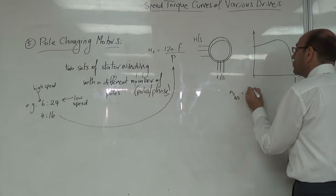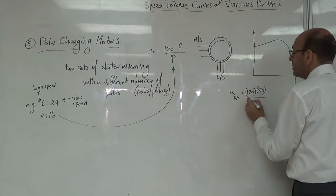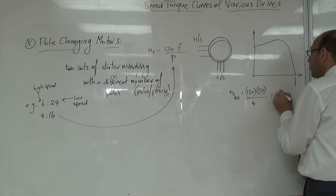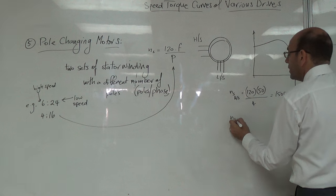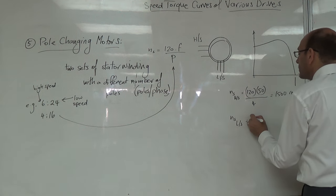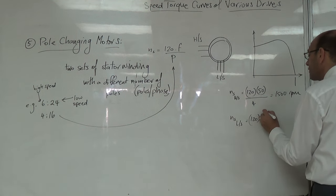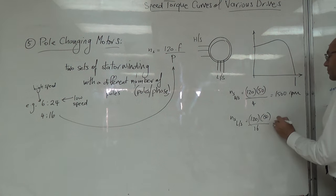بتساوي 120 في 50 على 4، وبتساوي 1500 RPM. و ns low speed بتساوي 120 في 50 على 16، بتساوي 375 RPM.